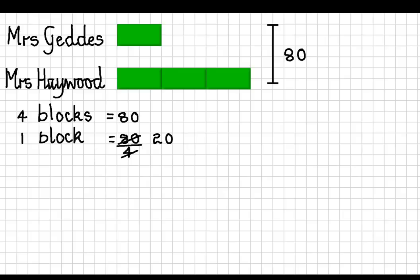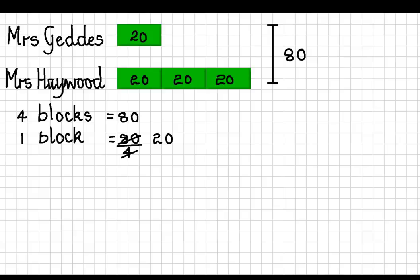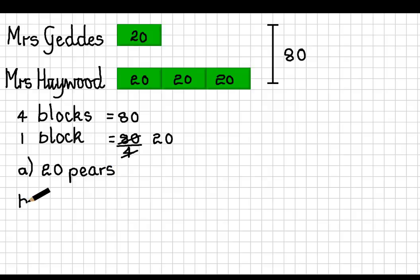I'm going to put that on the diagram. We're now going to answer the question. Part A: How many pears did Mrs Geddes have? We can see from the block diagram that Mrs Geddes had 20 pears. And Part B: How many pears did Mrs Hayward have? 20 add 20 is 40, add 20 is 60. So Mrs Hayward had 60 pears.